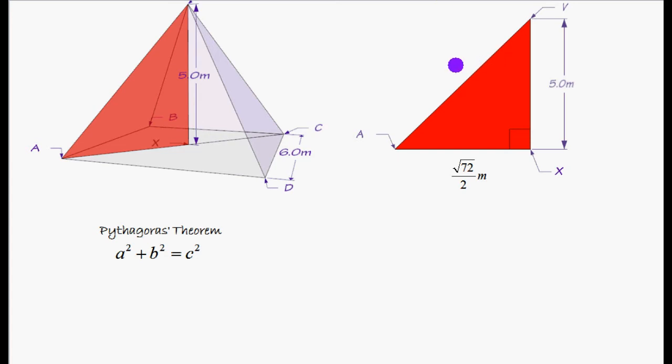So C in Pythagoras' theorem is always the longest side and is always opposite the right angle. We're going to call this side A. It doesn't matter which way around you put A and B because they've just got to be either side of the right angle. We're going to have this as B.